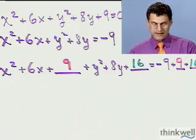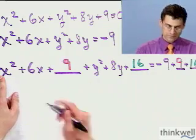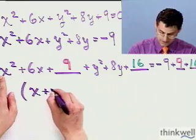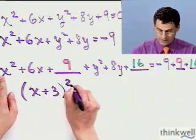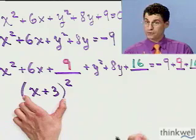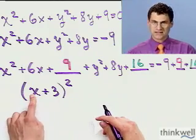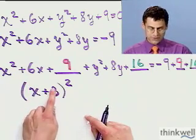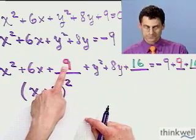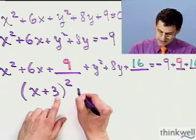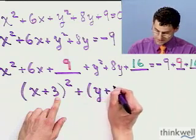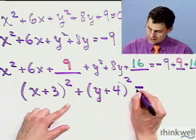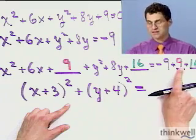Now look what happens — this should factor into a perfect square. And in fact it does: it's x plus 3, all squared. You can check that by FOILing: x times x is x squared, the inside and outside terms give 6x, and 3 times 3 is 9. Similarly, the y part gives us y plus 4, quantity squared. On the right side, minus 9 plus 9 is 0, and we still have the 16.